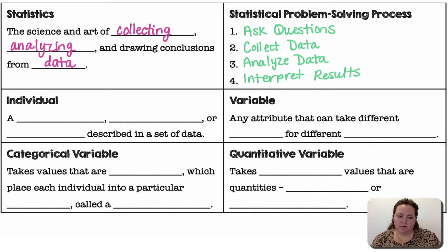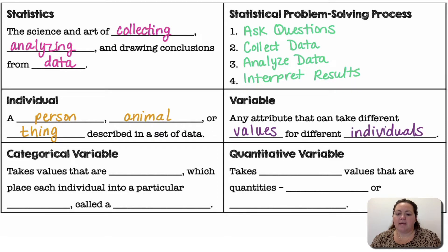Individual is a person, animal, or thing described in a data set. The variable is any attribute that can take different values for different individuals.